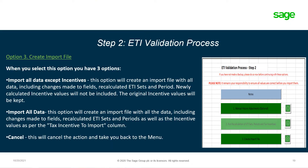Once the recalculation of the ETI sets, periods and tax incentives is completed, you may proceed to option three to create the import file. When you select this option, you will have three import options. The first option is to import all data except the incentive values — use this if you only want to import the sets and periods, keeping the original incentive values. The second option is to import all data, including the recalculated ETI sets, periods and incentive values as per the tax incentive to import column. The third option is to cancel, which will return you to the main menu.